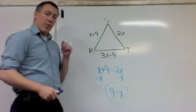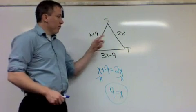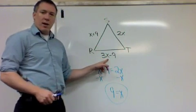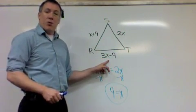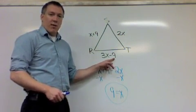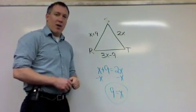If I want to double check, I can place nine back in here. Nine plus nine is 18. Two times nine, that's 18. That's good. Now I have two sides that are equal. If I place nine in here, three times nine is 27. Minus nine is 18. So there we have it. Three sides. All the lengths are 18. Therefore, it makes it an equilateral triangle.